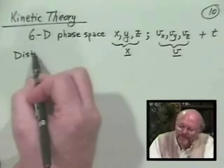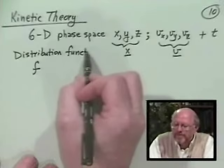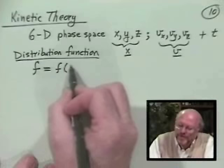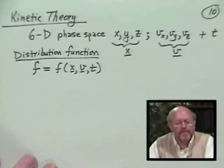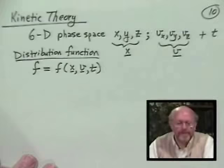That phase space density is called the distribution function f. The distribution function is a function of x, v, and t — that's six-dimensional phase space plus time, or three real space coordinates and three velocity space coordinates.